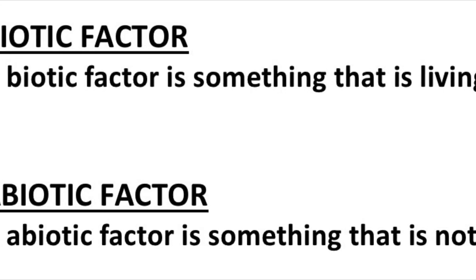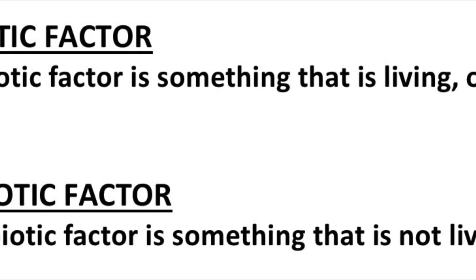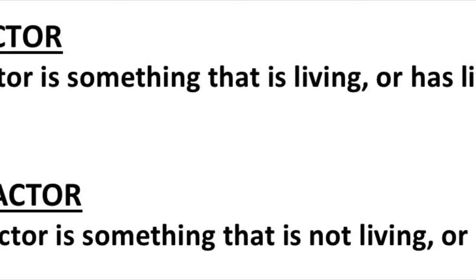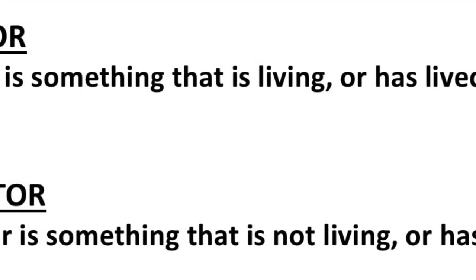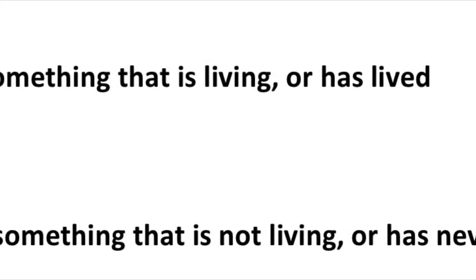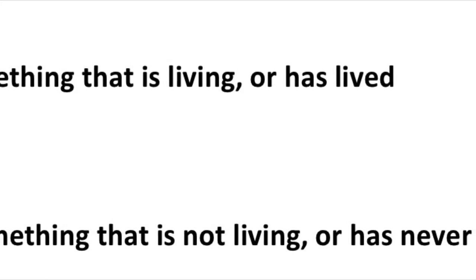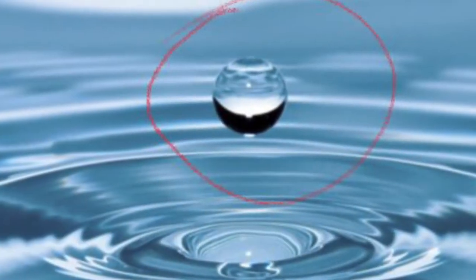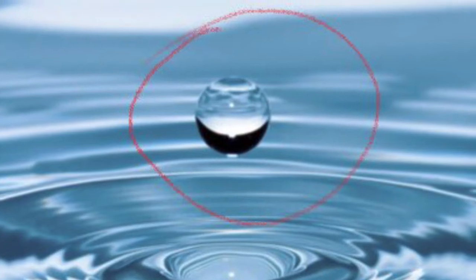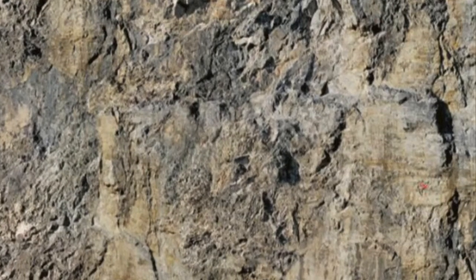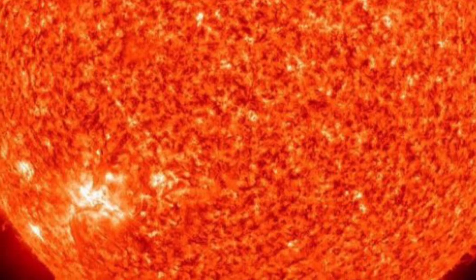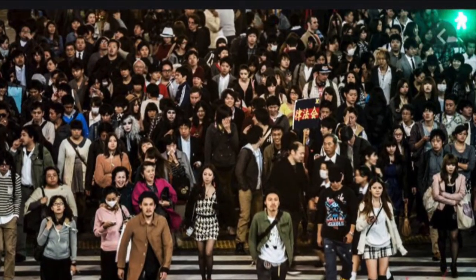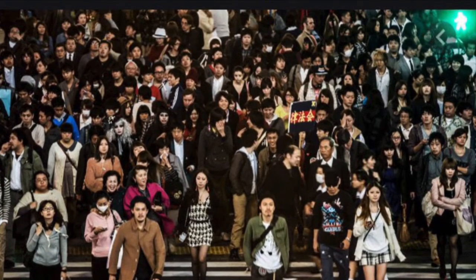Before we know what an ecosystem is, we need to know what are biotic factors and what are abiotic factors. A biotic factor is something that has lived or is living. Meanwhile, an abiotic factor is something that has never, ever lived. Examples of abiotic factors are water, air, rocks, and the sun. Examples of biotic factors are trees, animals, humans, and many more.